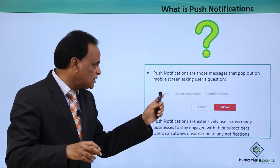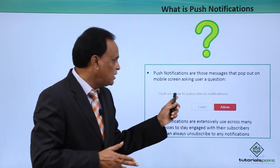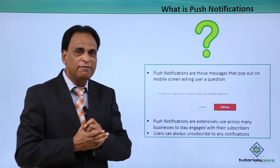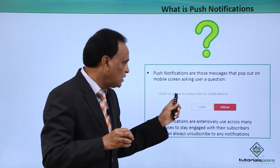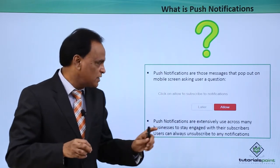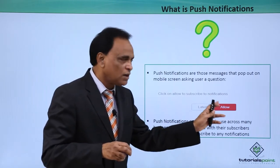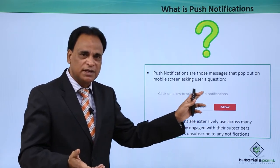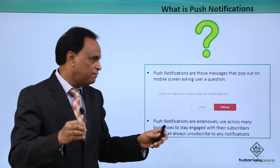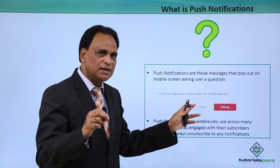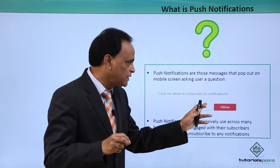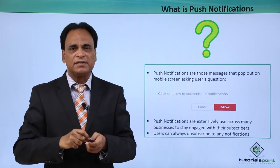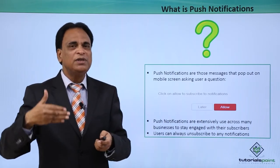To opt in, this is the first message that you will see. Click on 'Allow' to subscribe to notifications. There are two options: 'Later' or 'Allow'. Some say 'Not now', some say 'No', some say 'Yes' — there are various options that companies offer. If you click on 'Allow', it means you are allowing businesses to send you notifications.